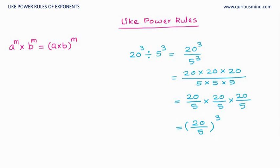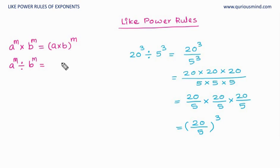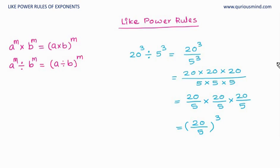So the rule becomes: a raised to m divided by b raised to m — where the base is different but the power is the same — equals (a ÷ b) raised to m. The power remains the same (m) and the base gets divided.